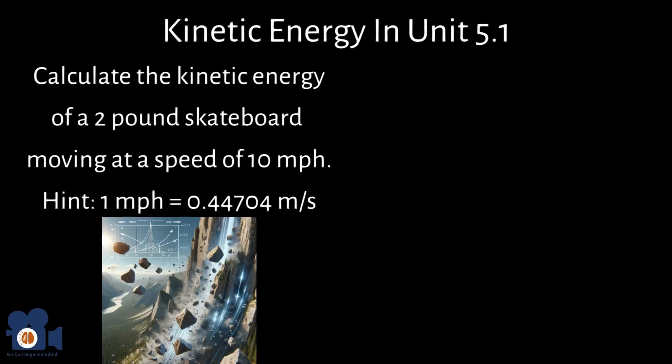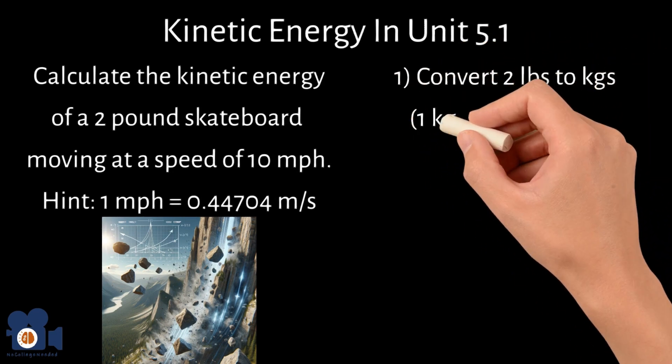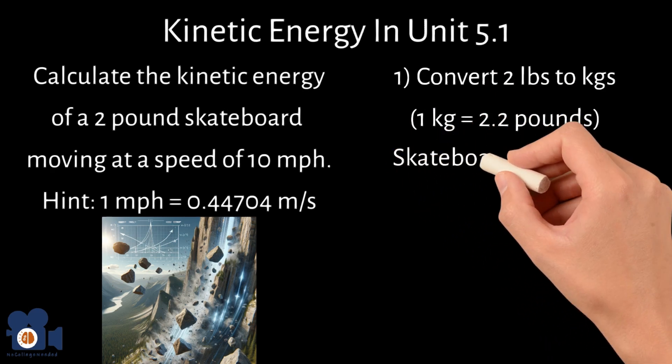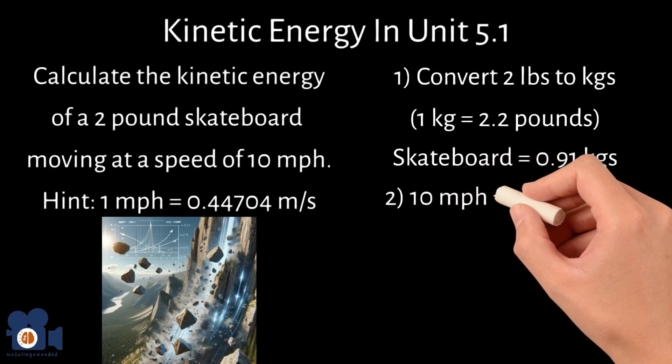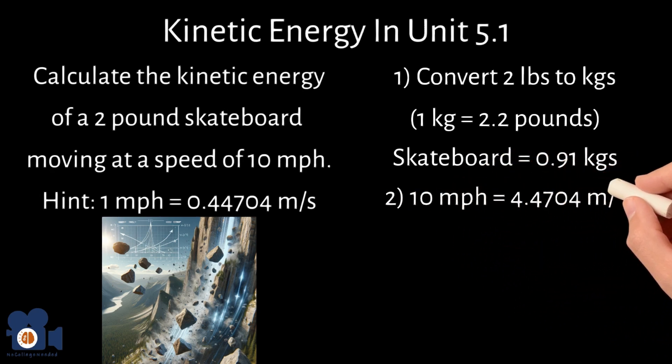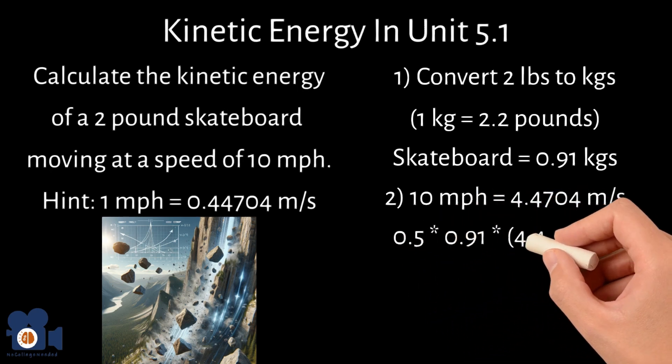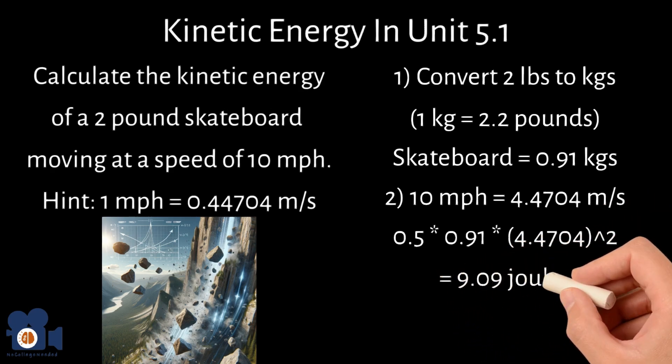Unit 5.1, you first need to convert the 2 pounds to kilograms, which 1 kilogram equals 2.2 pounds, so the skateboard equals 0.91 kilograms, and 10 mile per hour is 4.4704 meters per second. Plugging these values into the kinetic energy equation, we get 0.5 times 0.91 times 4.4704 squared equals 9.09 joules.